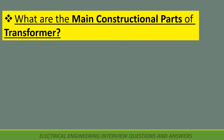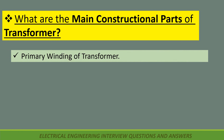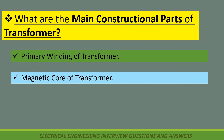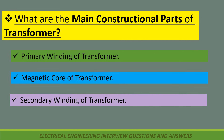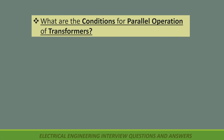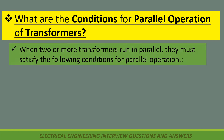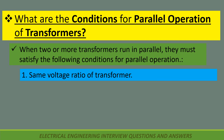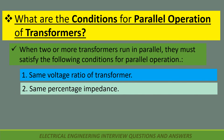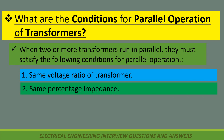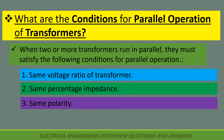What are the main constructional parts of a transformer? Primary winding of transformer, magnetic core of transformer, and secondary winding of transformer. What are the conditions for parallel operation of transformers? When two or more transformers run in parallel, they must satisfy: same voltage ratio, same percentage impedance, same polarity, and same phase sequence.